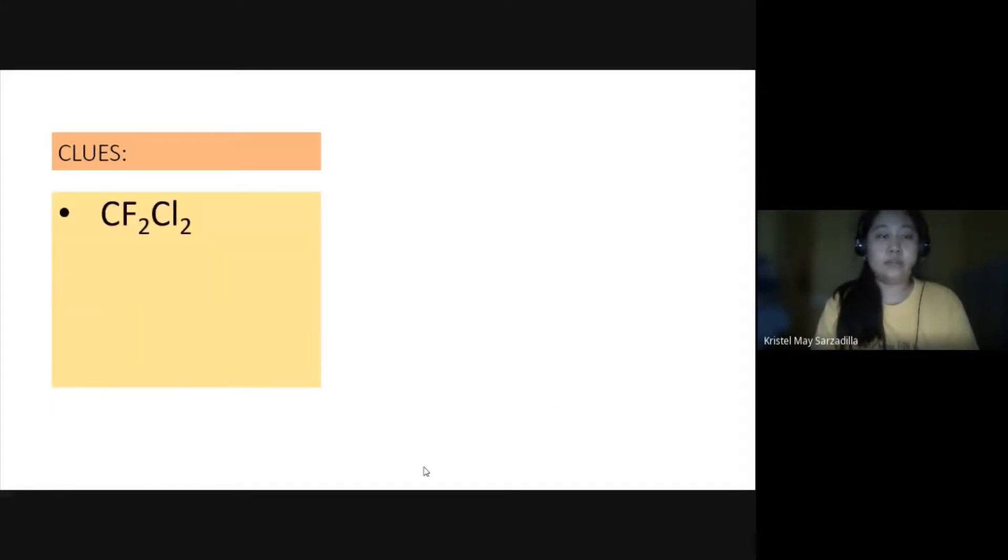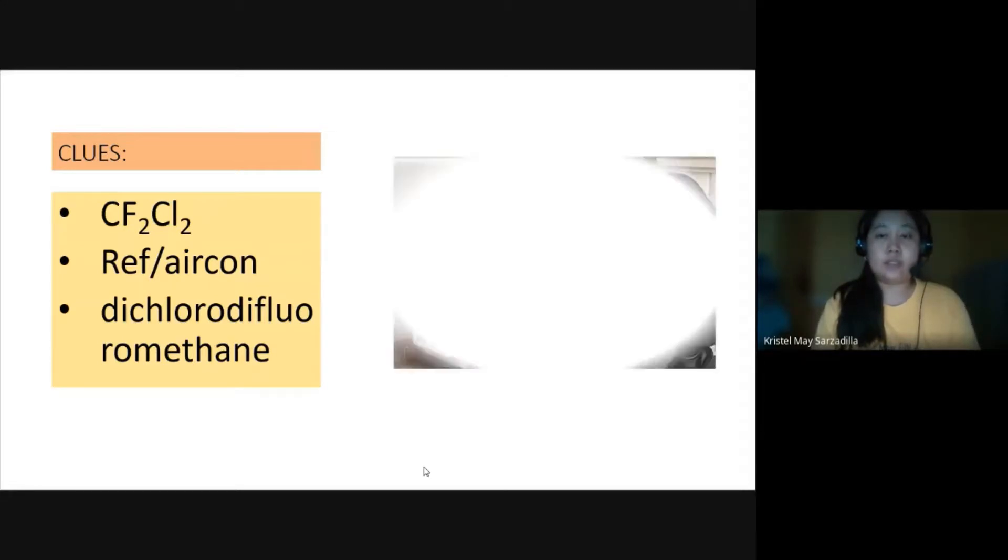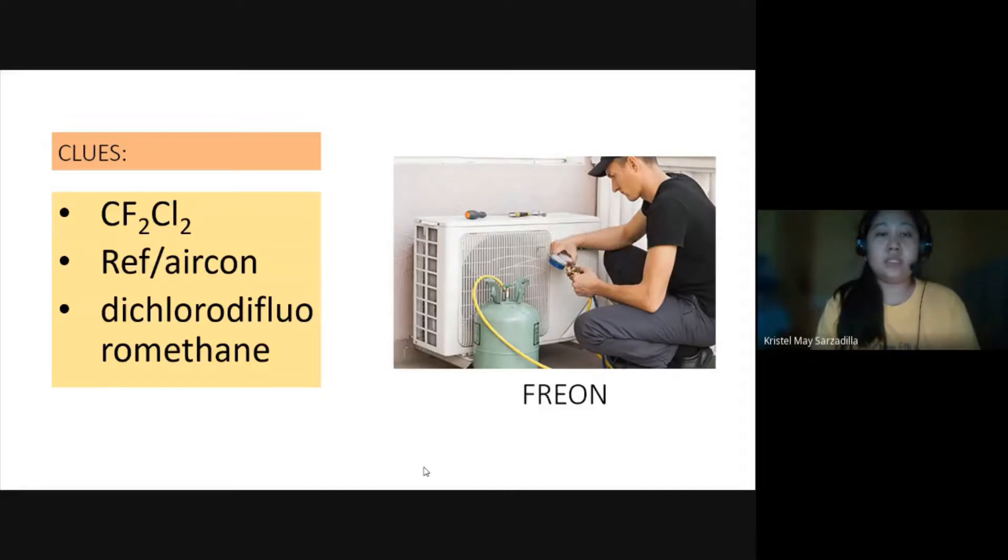Next, we have CF2Cl2. And it is usually released by refrigerators and air conditioners. Its chemical name, trichlorodifluoromethane. I can give you another clue. It's a greenhouse gas. Yes, you're right. The answer is freon.